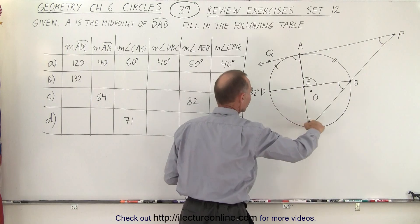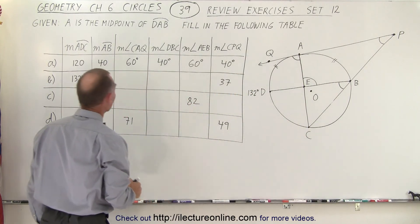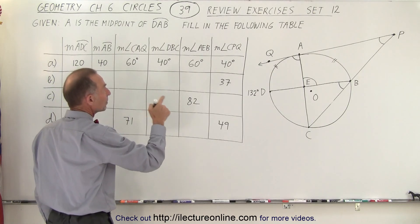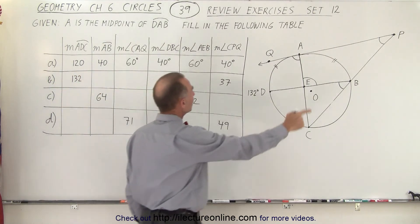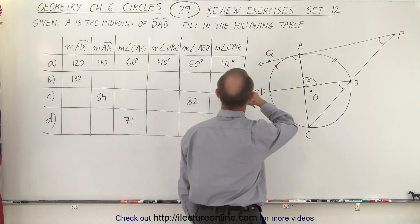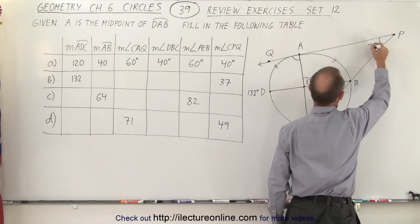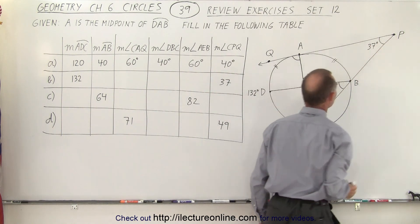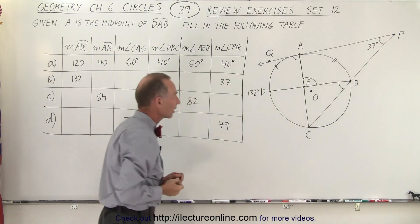And the measure C to P to Q is 37 degrees. So this is given to us as 37 degrees. Now we need to find everything else.